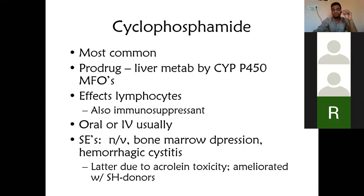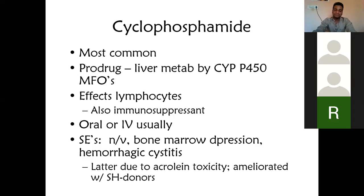Hemorrhagic cystitis happens because of a chemical called acrolein, which gets formed and deposited in the bladder. This causes hemorrhagic cystitis. But it can be ameliorated with the help of an SH donor. Note: cystitis refers to inflammation of the urinary bladder — similar to UTI.